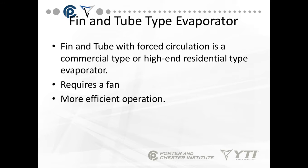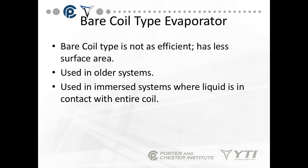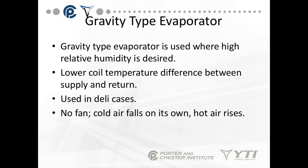The fin and tube type evaporator is the most frequent one you'll see, used with forced circulation in commercial or high-end residential systems. It requires a fan and has more efficient operation because I don't need as large a surface area since I'm moving a lot of air across the coil. The bare coil type has no fins, so it's less efficient with less surface area, and is used in immersed systems where liquid contacts the entire coil. The gravity type is used where high relative humidity is desired, has a lower coil temperature differential, and is used in deli cases — cold air falls and hot air rises, creating its own air circulation pattern without a fan.